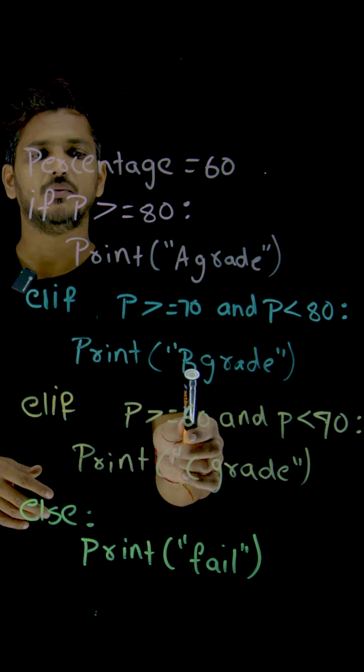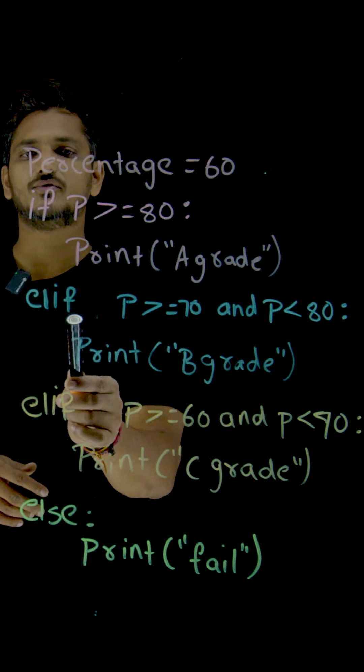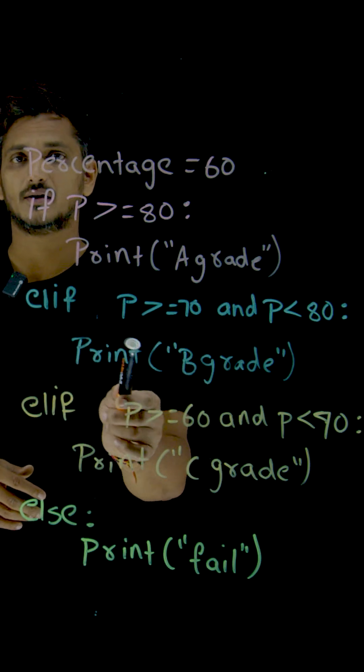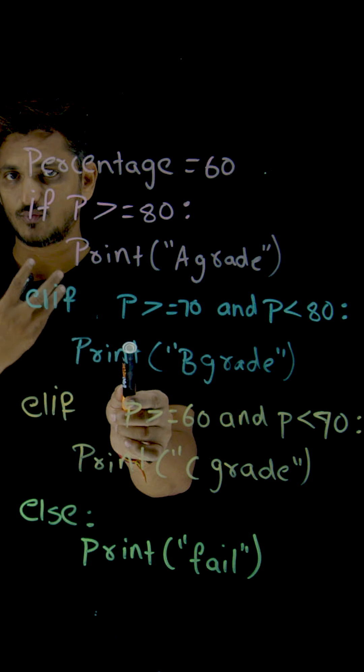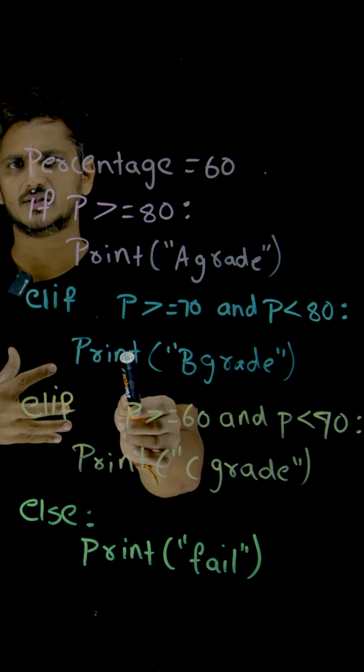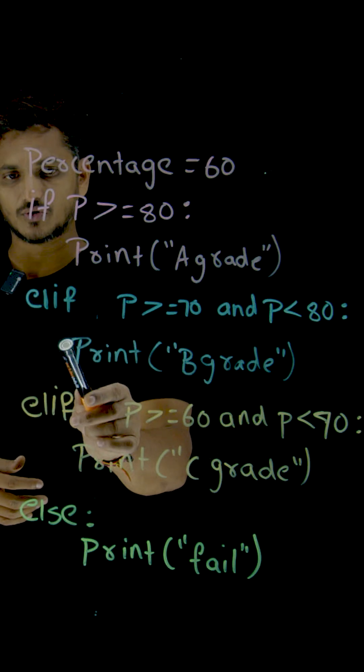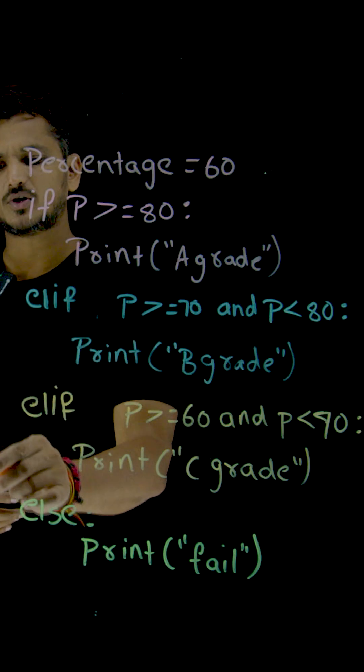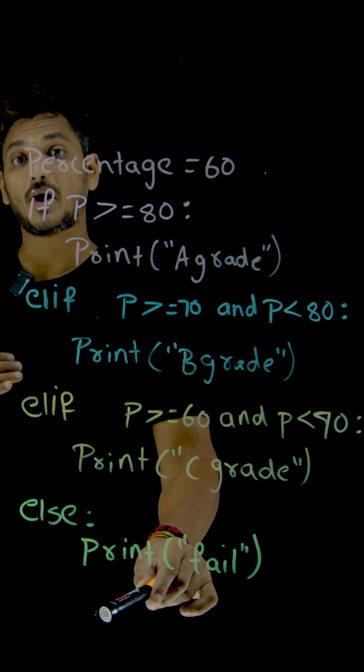Then print B grade. Execute the body of this else if condition. Here we have written only one line. You can write any number of lines. If it is true, execute this body, come out of this and execute the remaining code.